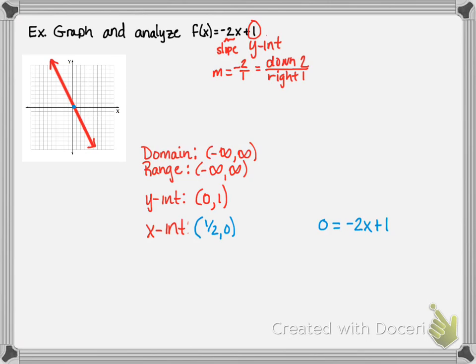So I could take my f(x), which is y, substitute 0 in for it, set that equal to -2x + 1, and I can solve. I can add 2x to both sides, get 2x = 1, divide both sides by 2, x = 1/2. So that's why I can be sure that my x-intercept is (1/2, 0).